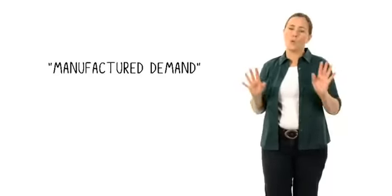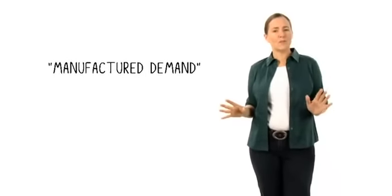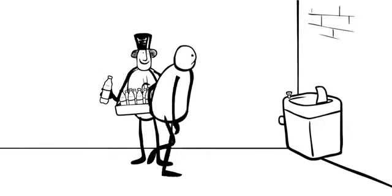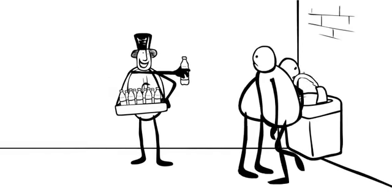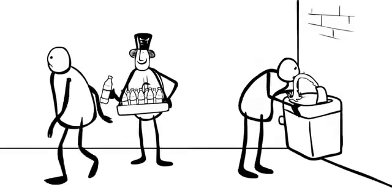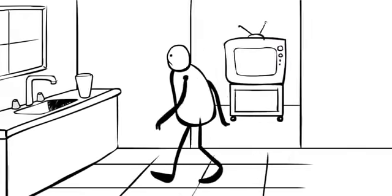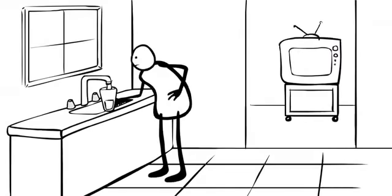So how do you get people to buy this fringe product? Simple. You manufacture demand. How do you do that? Well, imagine you're in charge of a bottled water company. Since people aren't lining up to trade their hard-earned money for your unnecessary product, you make them feel scared and insecure if they don't have it. And that's exactly what the bottled water industry did.